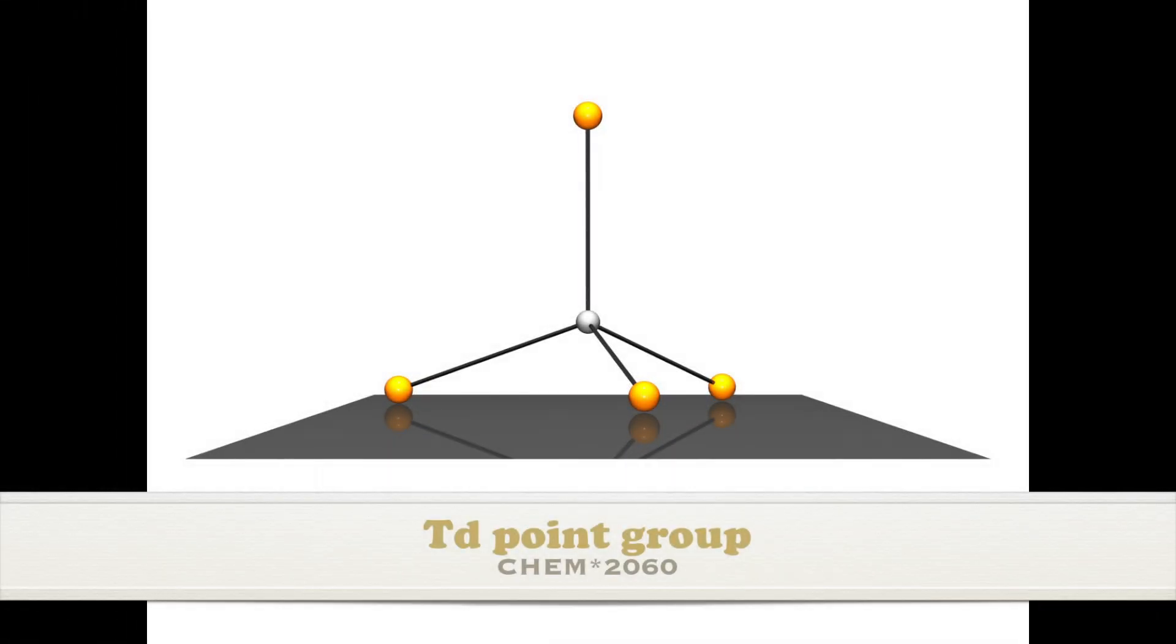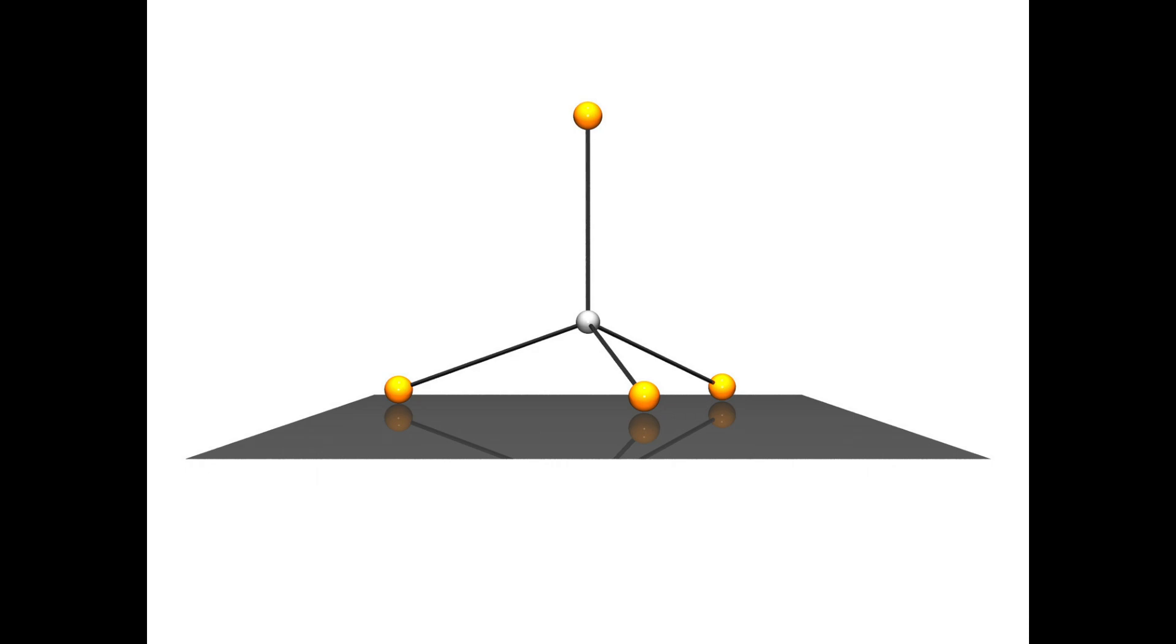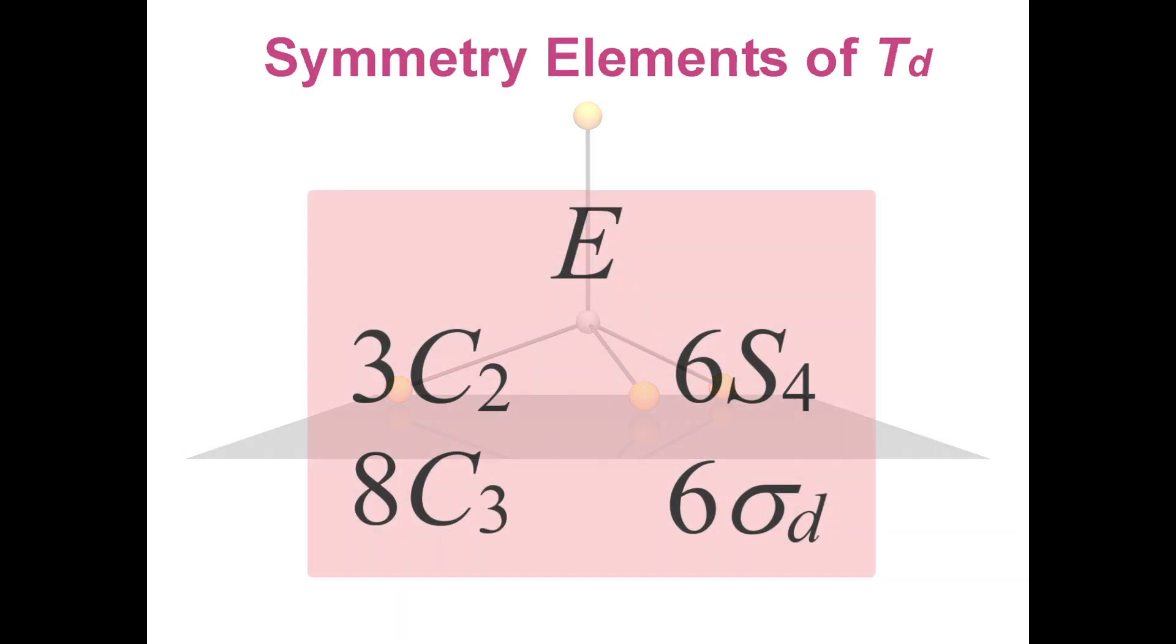In this video, we are going to find all the symmetry elements in the tetrahedral point group. There are fewer symmetry elements in the tetrahedral point group than in the octahedral point group, but they tend to be harder to find.